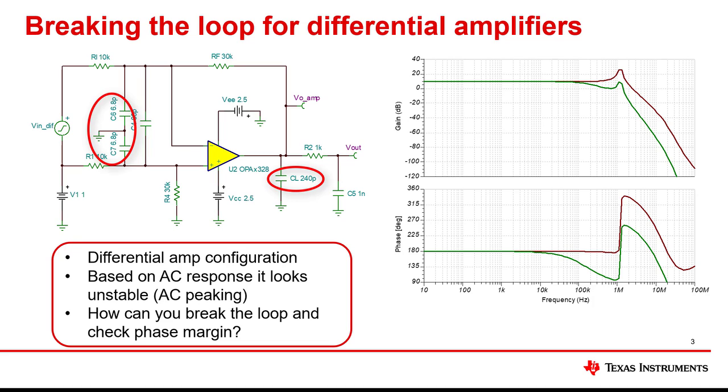Running an AC test shows some gain peaking which is further evidence that there is a stability problem. This circuit has a differential input and a complex feedback network.